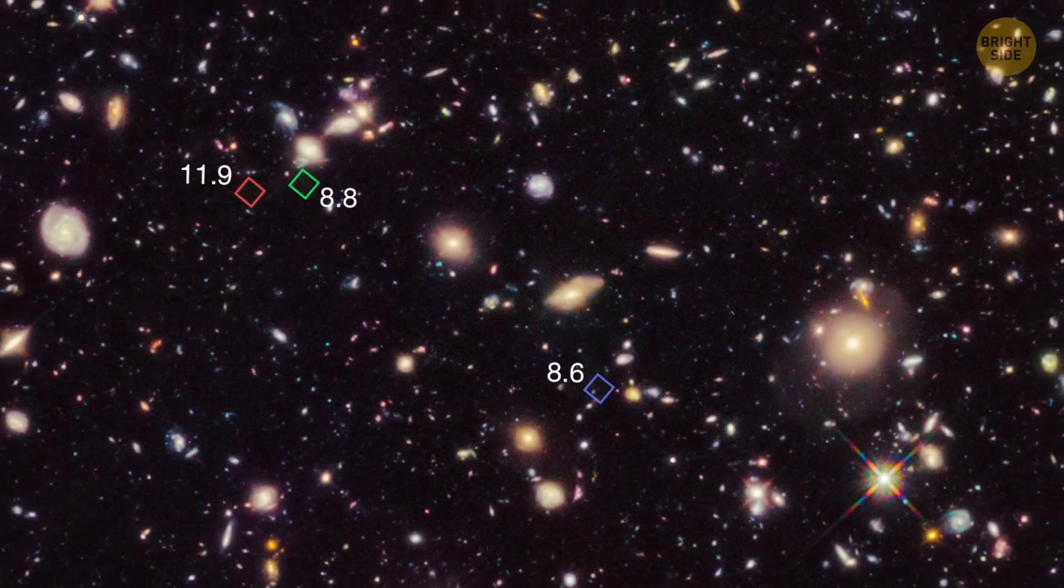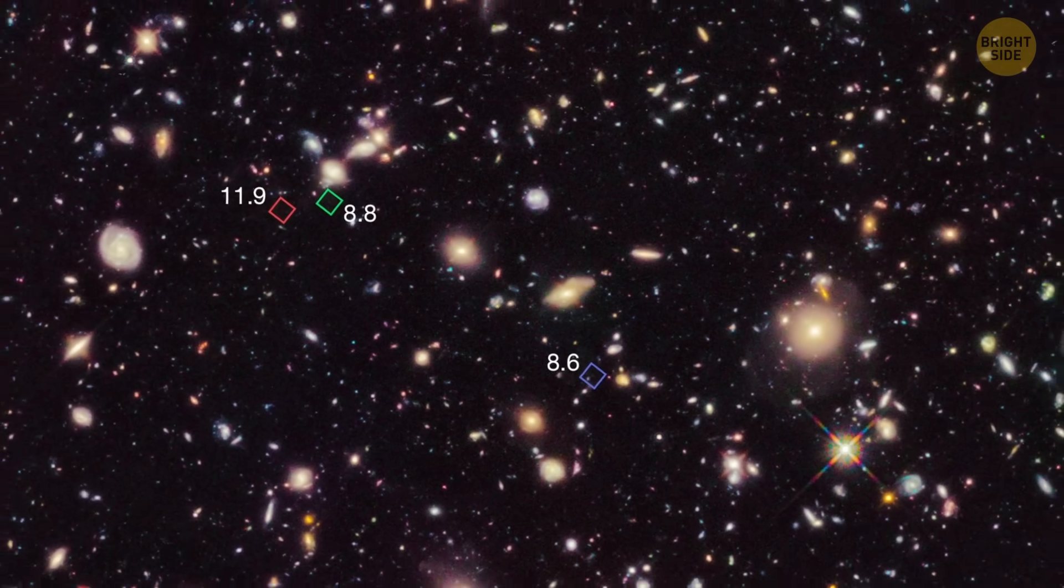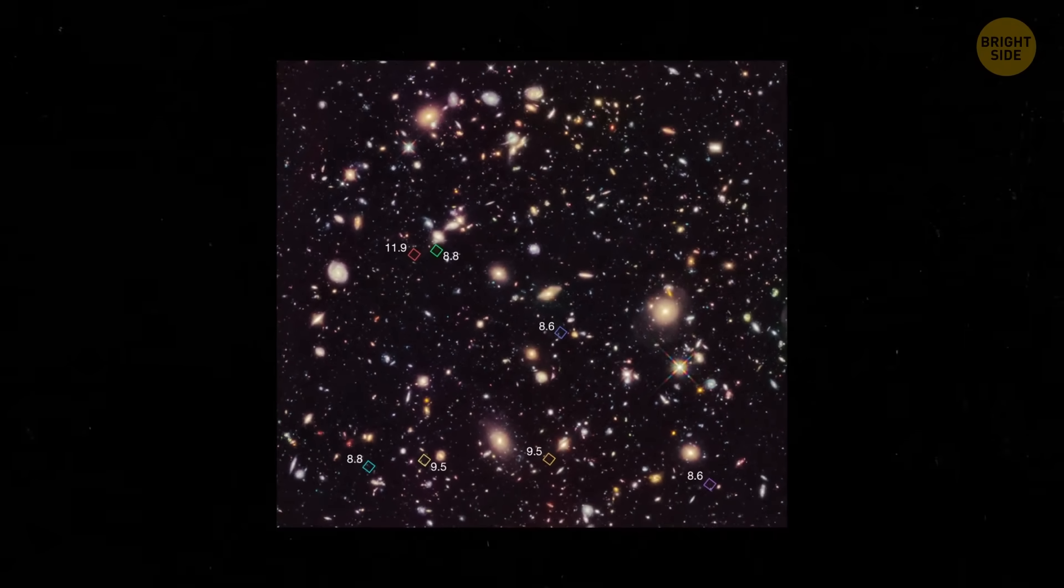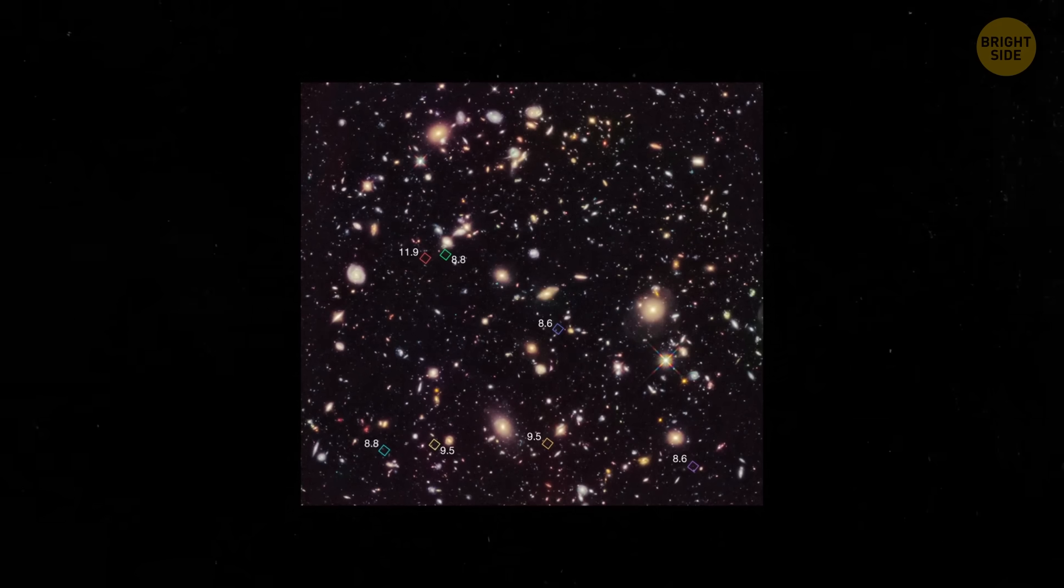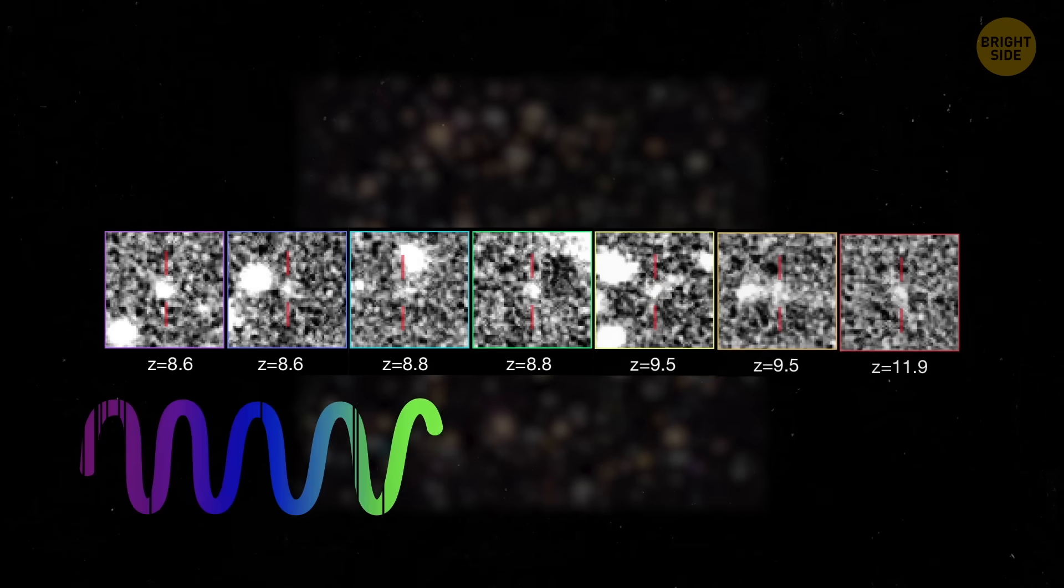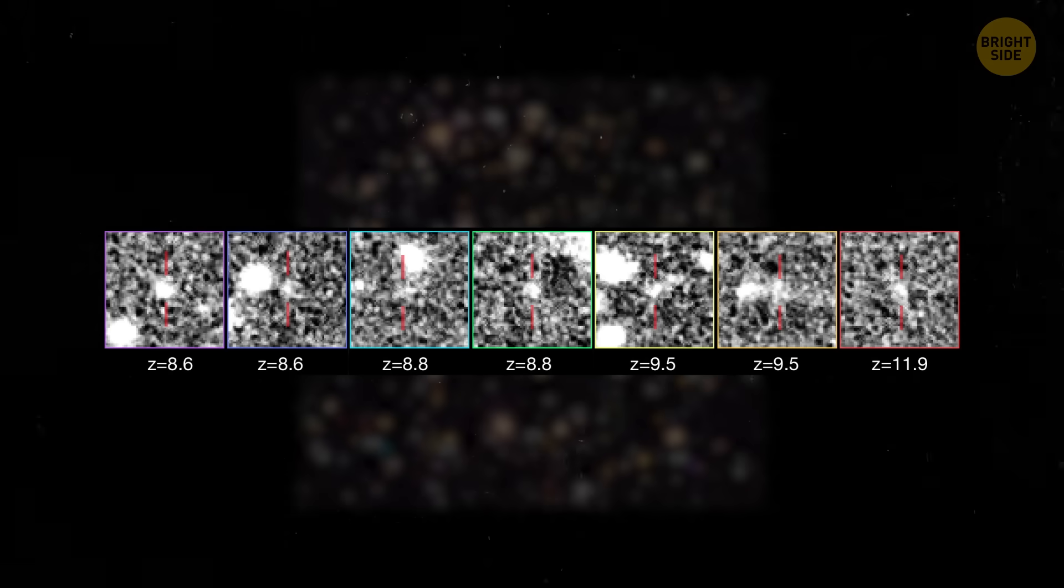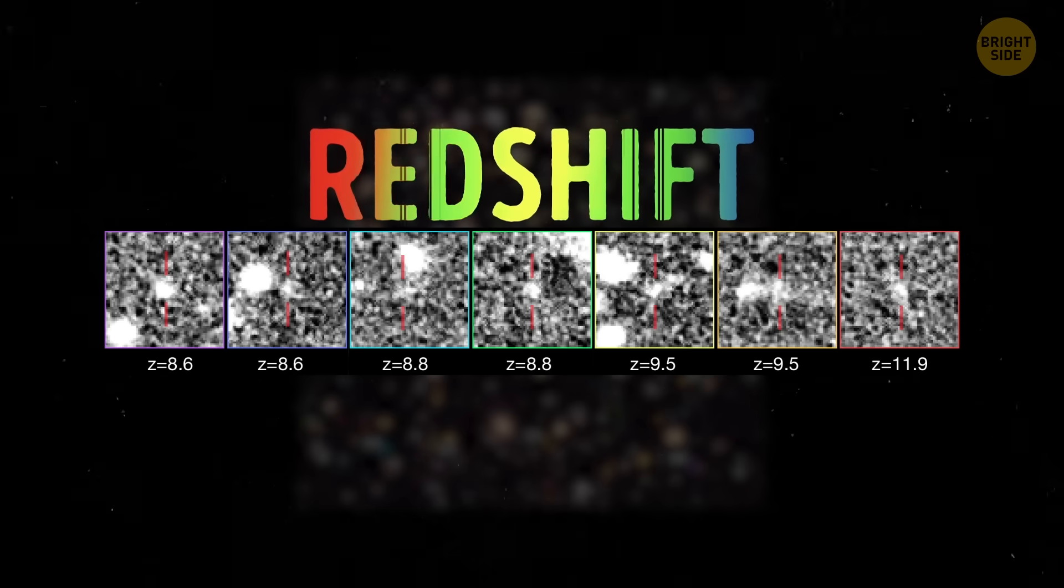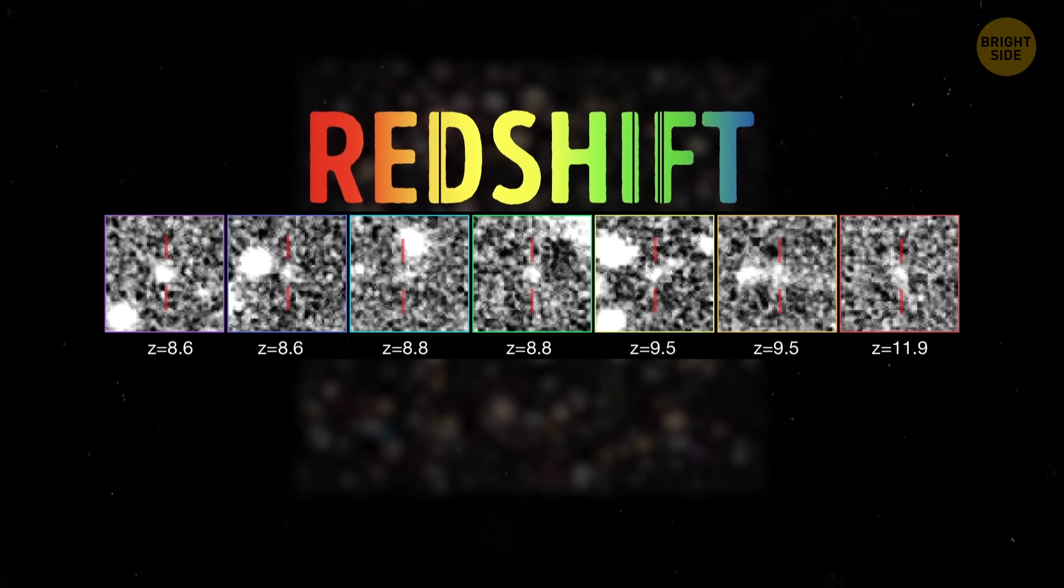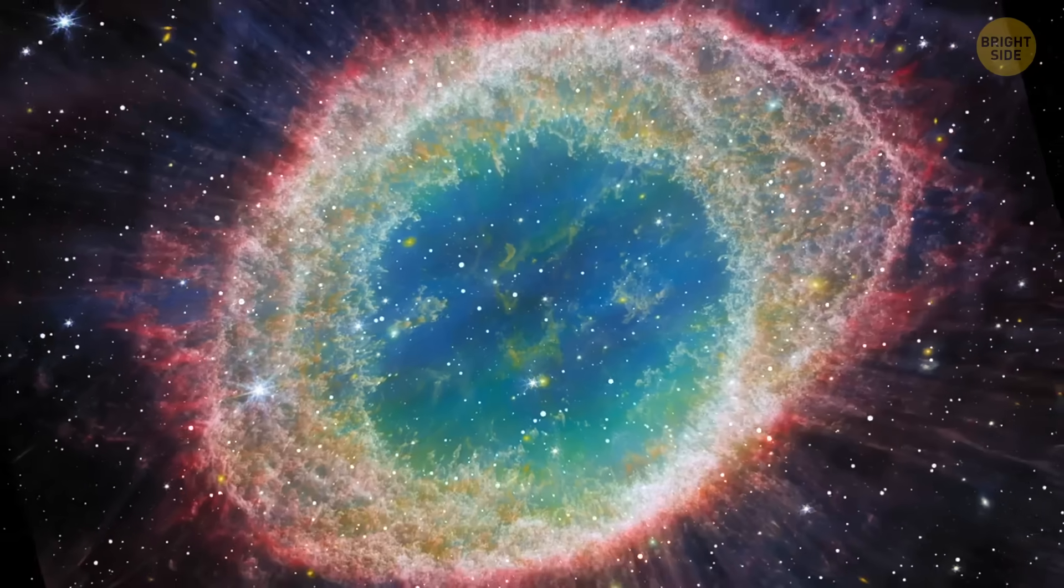One of the main goals of the Webb Telescope is to observe the light from the very first stars and galaxies in the universe. Unfortunately, the farther away an object is, the faster it's moving away from us. And the longer the light has to travel, the more it stretches towards the infrared side of the spectrum. This is called redshifting in astronomy. But thanks to its infrared equipment, James Webb can reveal previously invisible worlds to us.